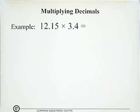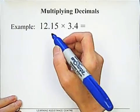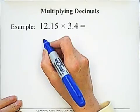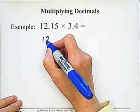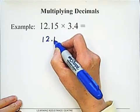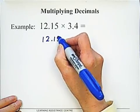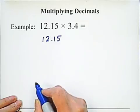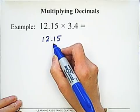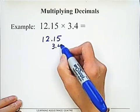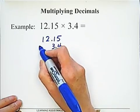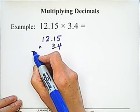12.15 × 3.4. First, multiply the numbers — so you don't need to worry about the decimal. Treat 3.4 just like you multiply whole numbers.